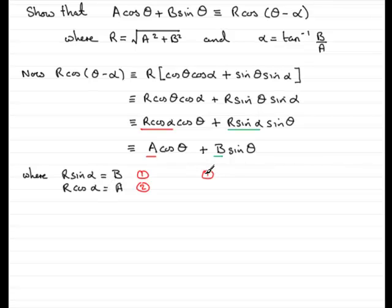I can do equation 1 divided by equation 2. And what that's going to give me is R sin α over R cos α equals B divided by A. But if I had this over this, then the R's would cancel and leave me with sin α over cos α, which you should know is tan α. And so, tan α would be equal to B divided by A. And if I inverse tan both sides, I get that α equals the inverse tan then of B over A.